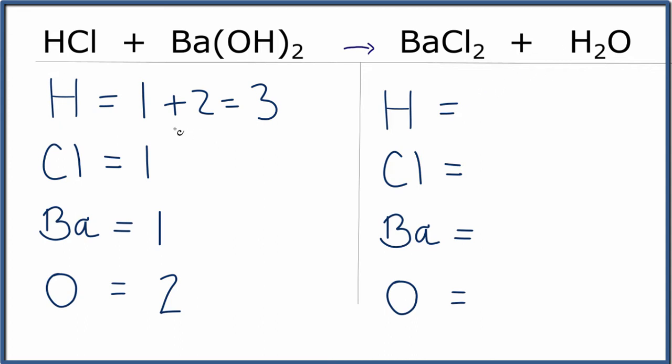Over on the product side, we'll keep them in the same order as we have here. Hydrogens, two. Chlorines, two. Barium, one. Oxygen, one.